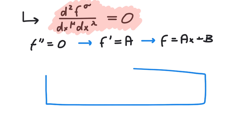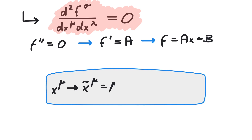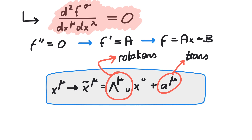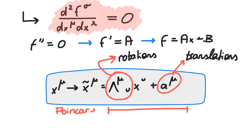The standard notation for the first constant is the uppercase Greek letter lambda. Lambda describes rotations in spacetime, and A describes translations in time and space. Together, they form a Poincaré transformation, whereas lambda alone defines a Lorentz transformation. That's pretty much it for this time. Thanks for watching, and see you next week.